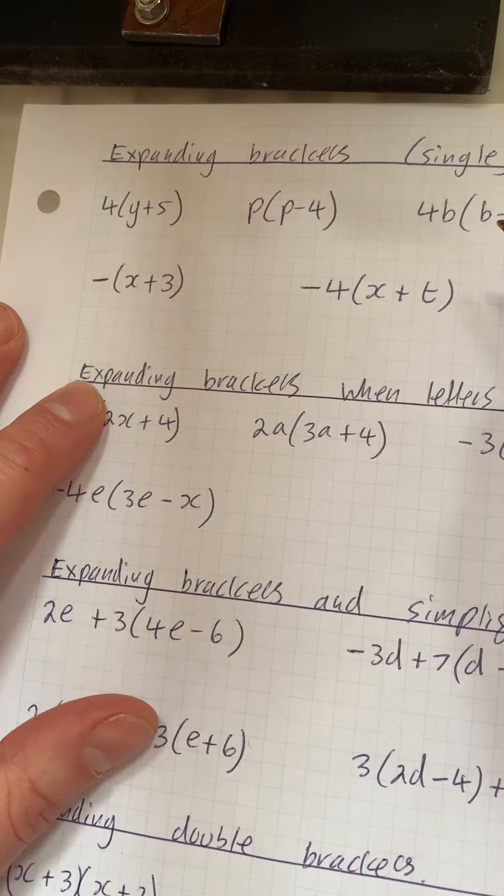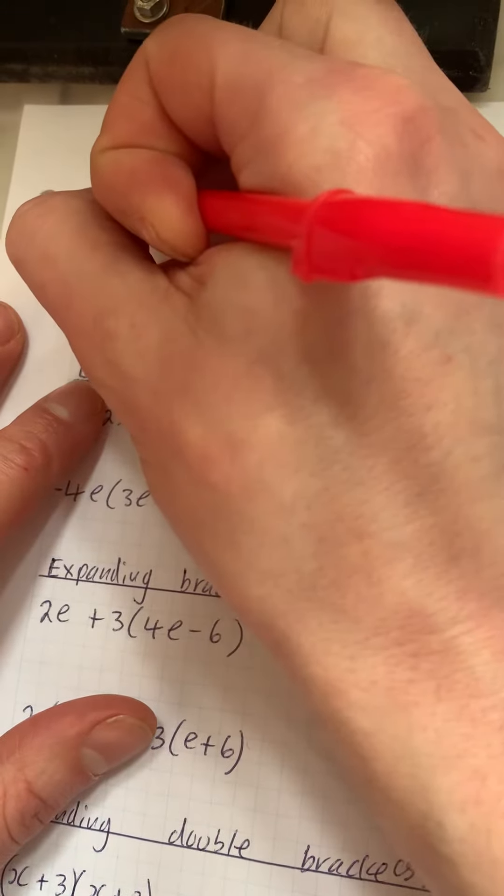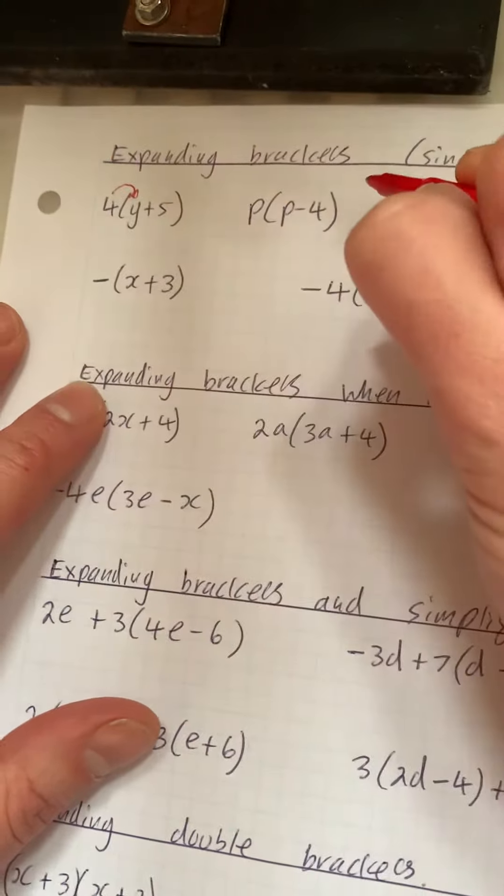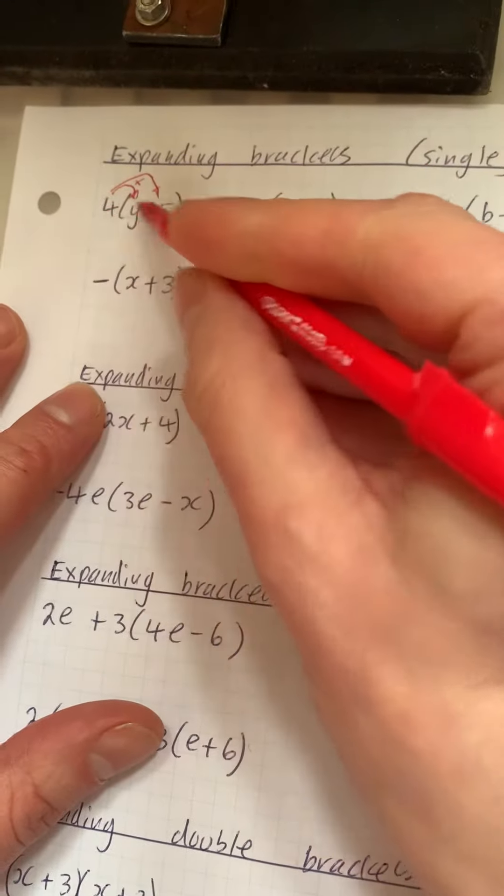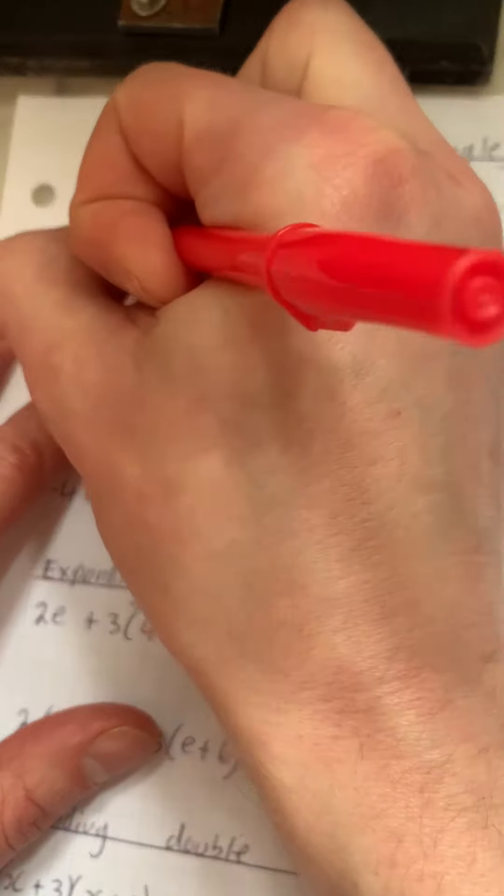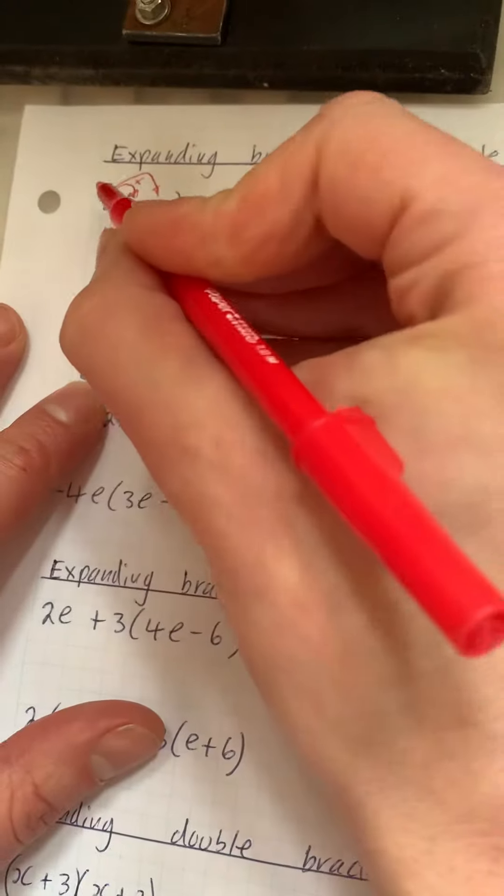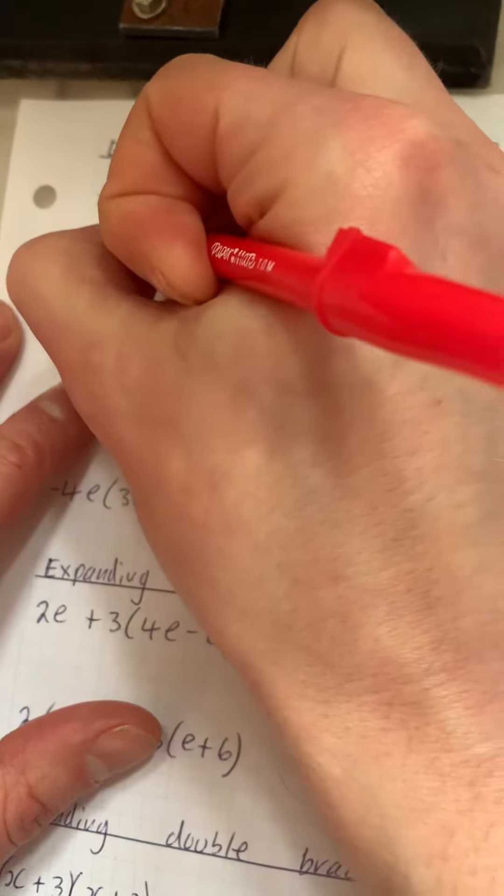Okay, expanding single brackets. What we do is everything on the outside, we times by everything on the inside. So I've got 4 times y, which is 4y, 4 times 5, which is 20.